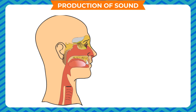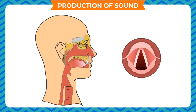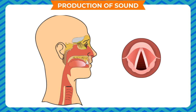The voice box is situated in the neck at the upper end of the windpipe. The sound produced is controlled by vocal cords, which are thin membranes stretched across the voice box. There are muscles attached to the vocal cords. These muscles can vary the tension in the vocal cords — making them tight or loose — and with the help of these muscles, we can make different sounds.